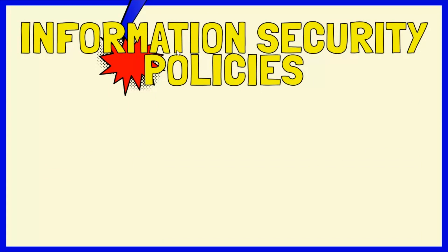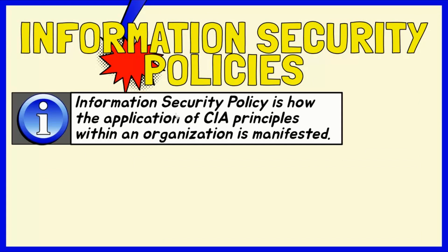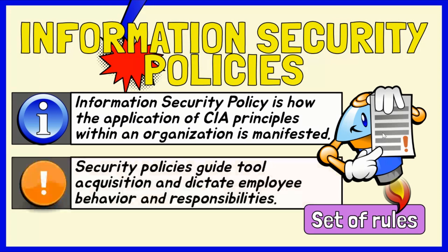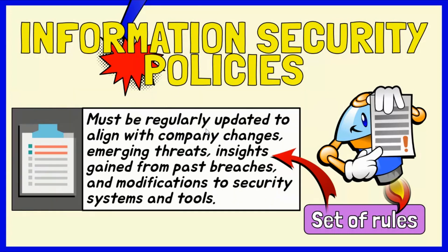The application of CIA principles within an organization is manifested through an information security policy. Unlike a physical security tool, this is not hardware or software. Instead, it is a set of rules documented by the enterprise, tailored to its specific needs and characteristics. Security policies serve as a guide for the organization's choices in acquiring security tools while also dictating employee behavior and responsibilities. To enhance the effectiveness of the policy, regularly update it to align with company changes, emerging threats, insights gained from past breaches, and modifications to security systems and tools.